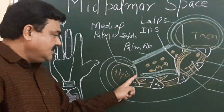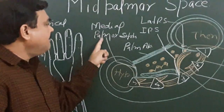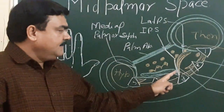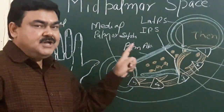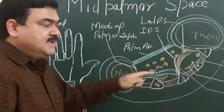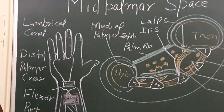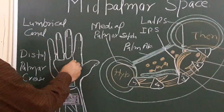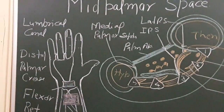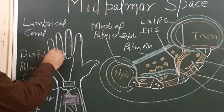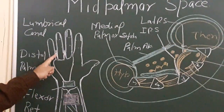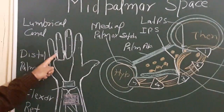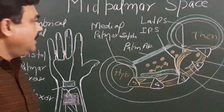Medially it is bounded by the medial palmar septum, and laterally it is bounded by the intermediate palmar septum. These are the boundaries of the mid-palmar space. If this space is infected, pus can be drained by making an incision over this space. This is all about the mid-palmar space.